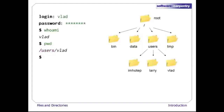Underneath /users, we find one directory for each user with an account on this machine. The mummy's files are stored in /users/imhotep, the wolfman's in /users/larry, and ours in /users/vlad, which is why vlad is the last part of the directory's name.